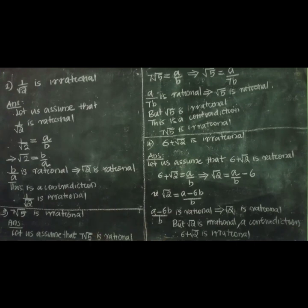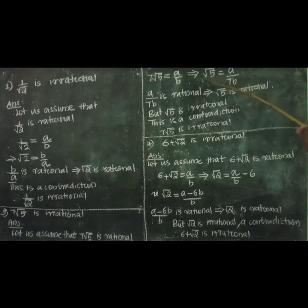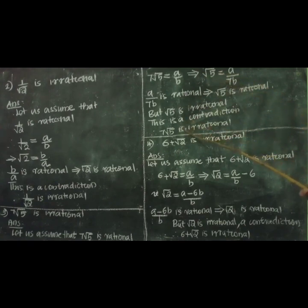Question number 3: prove that 7 root 5 is irrational. Let us assume that 7 root 5 is rational. Therefore, 7 root 5 equal to a by b. Taking 7 to the right side, we get root 5 equal to a by 7b. Since a by 7b is rational, root 5 is rational — but this is a contradiction because root 5 is irrational. Therefore, 7 root 5 is irrational.